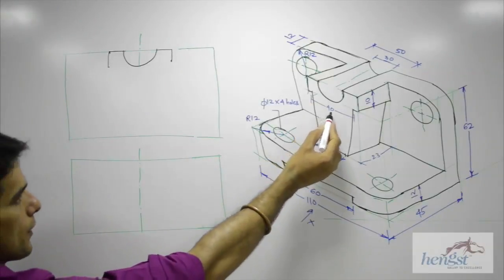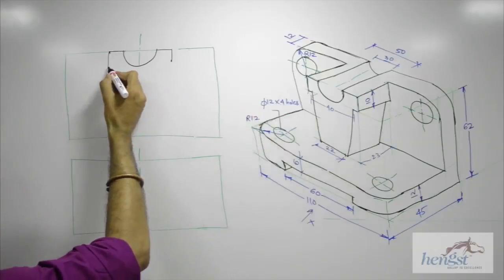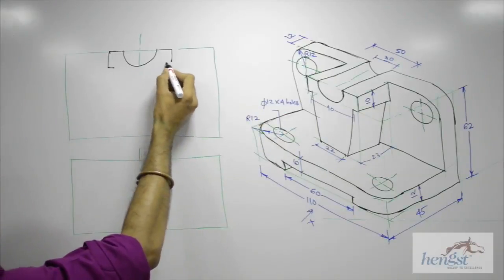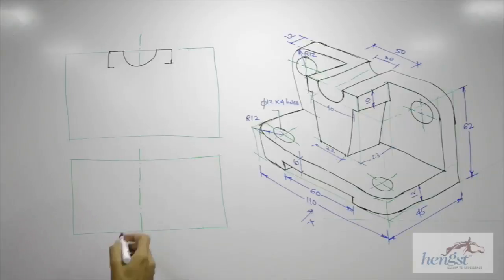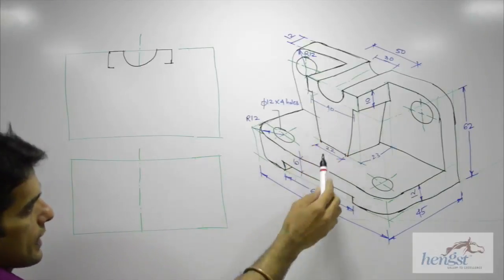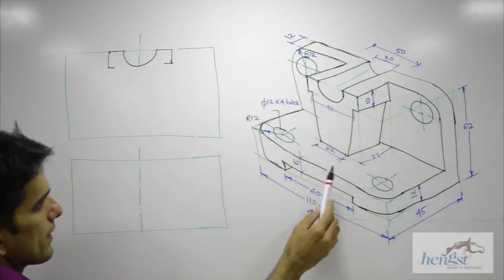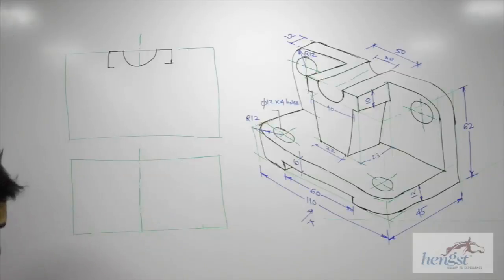After that, if you see how much is this? 40. So then we need to go inside by 5 on both sides. Then if you see, this height is 12. So from bottom we can go up by 12.